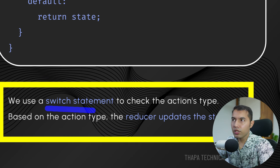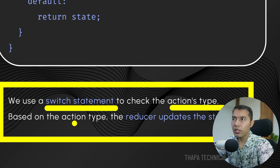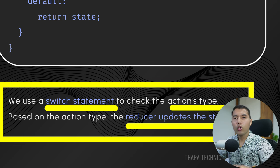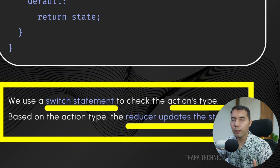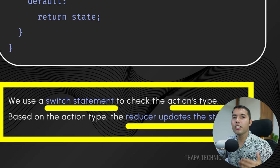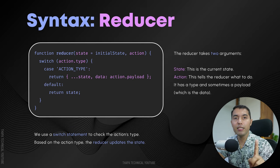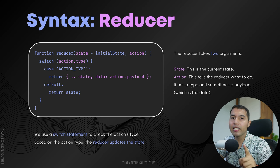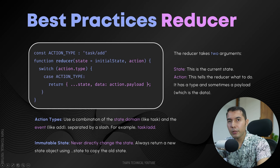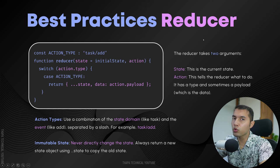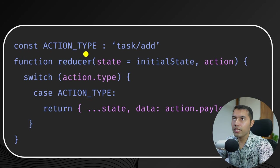We use a switch statement to check the action type. Based on the action type, the Reducer updates the state. Obviously, based on the action type, the state is updated and a new state is returned. You must never directly mutate or update the old state.